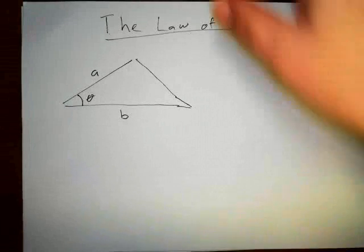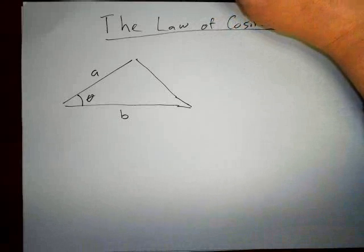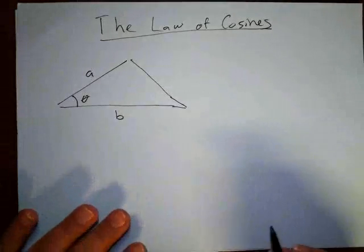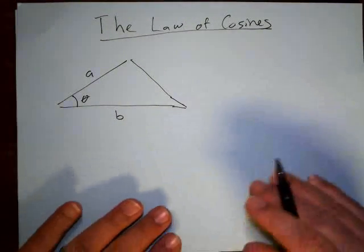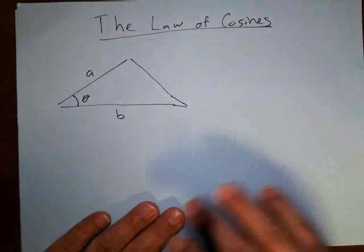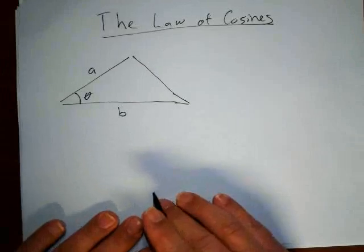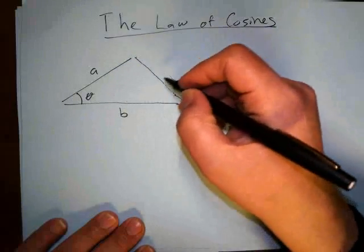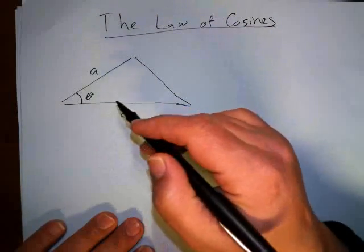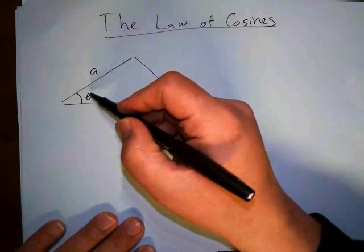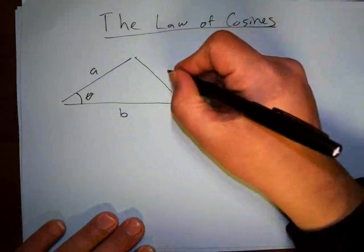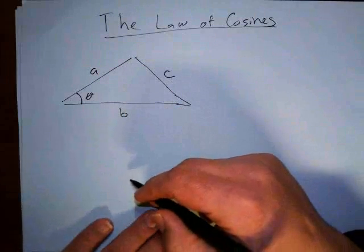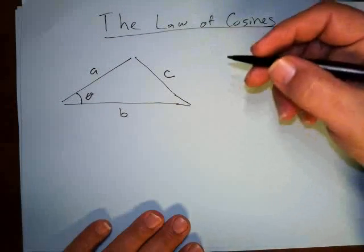Let's look at the law of cosines. In this first video, I just want to explain what the law of cosines says, and then I'm actually going to prove it, because it's really not that difficult of a proof. The law of cosines relates two sides and a given angle to the opposite side. The information you're given is a side, an angle, and a side, and it relates to this third side — we'll call it C. That's when you use the law of cosines.